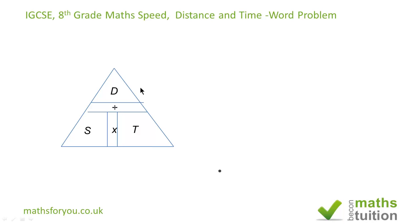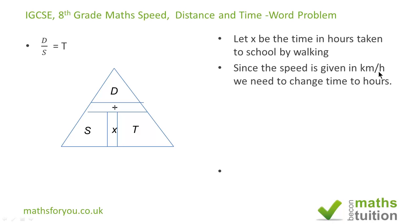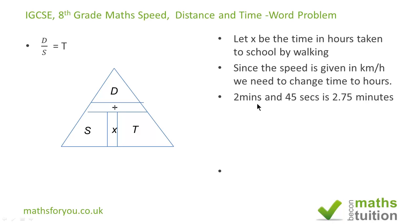Hopefully you are familiar with the distance, speed and time triangle. If we say x is the time it takes to walk to school in hours — in hours, because the speed is given to us in kilometers an hour. What we must not do is mix up units, so we must either work in hours or in minutes. In this case, I think it's easier to work in hours.